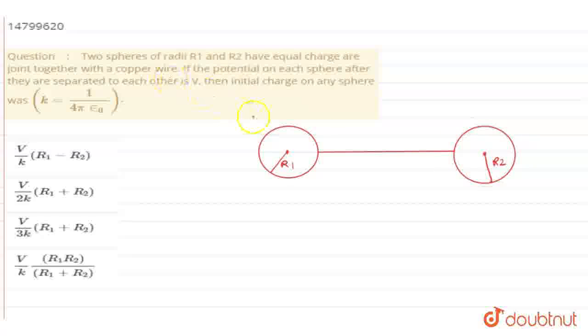Initially, the charge on both spheres was the same. Let it be capital Q. Suppose small q charge flows through this wire from this sphere to this sphere. Then this sphere will have Q minus q and this sphere will have Q plus q. Now what will be the potential?